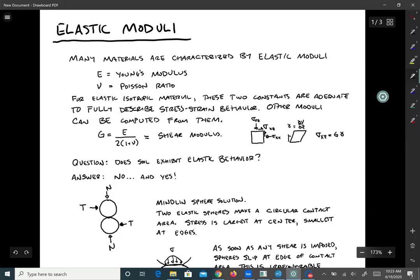Gamma is DU/DZ where U is horizontal displacement. So the shear stress sigma XZ equals G times gamma. Now we've got the correct modulus G for us to characterize this loading behavior.